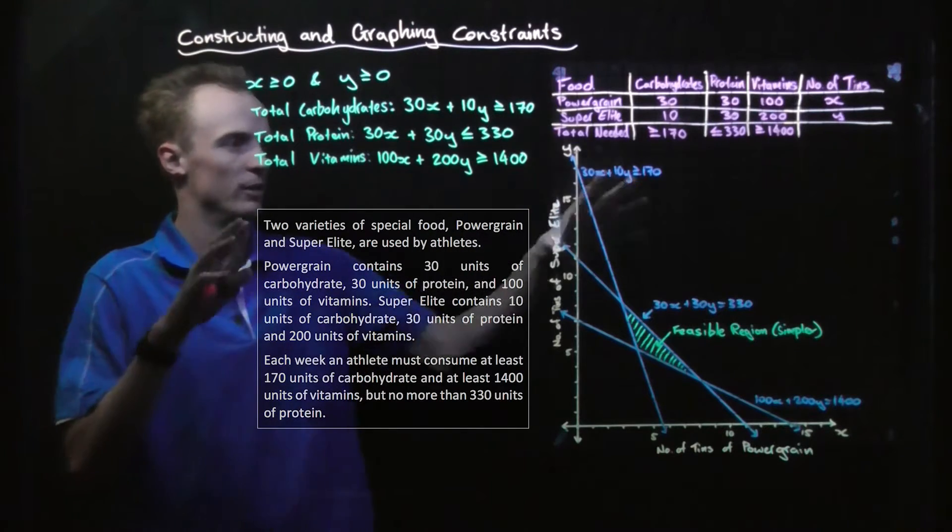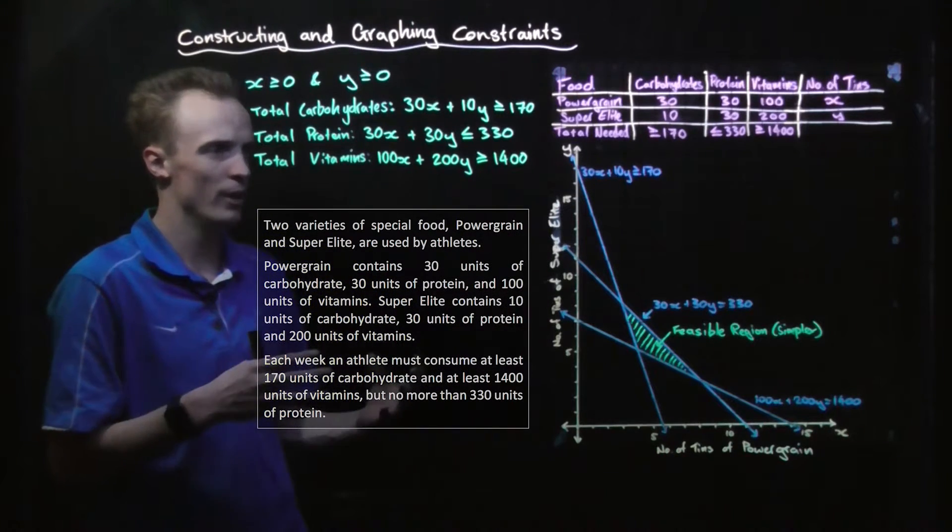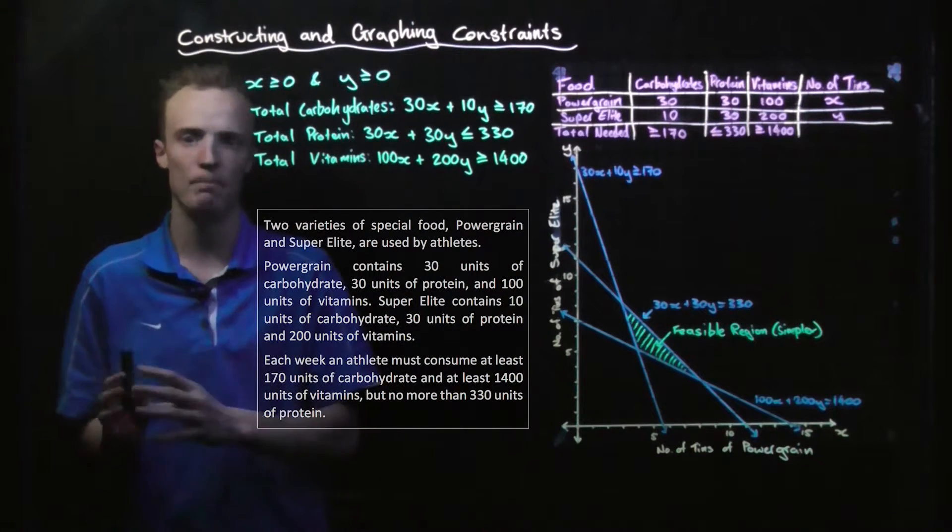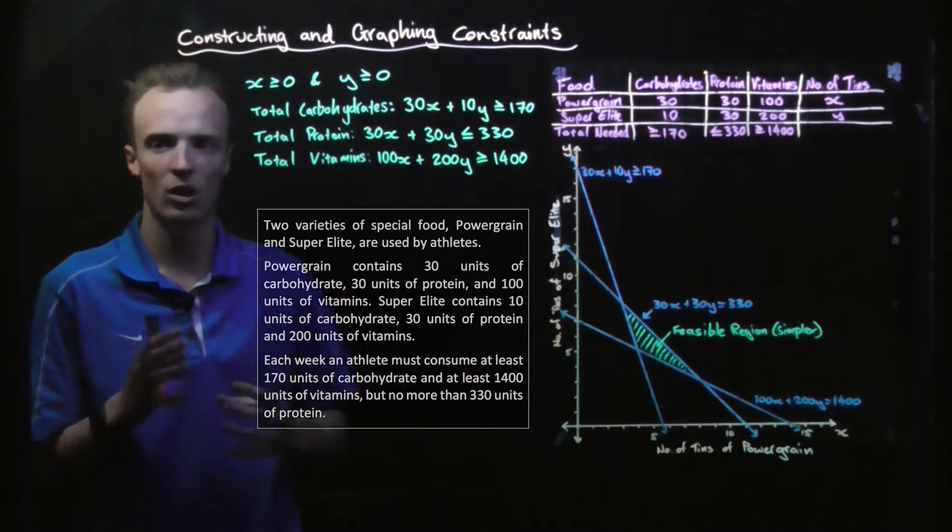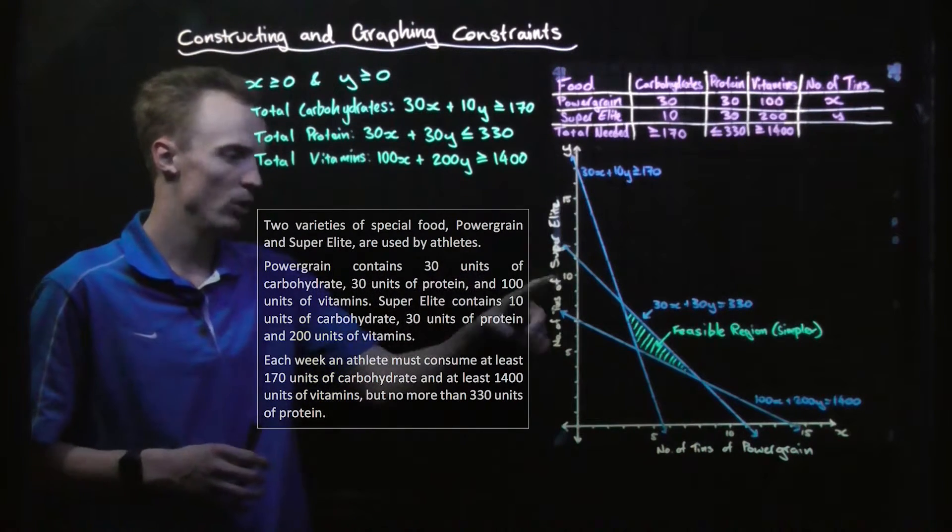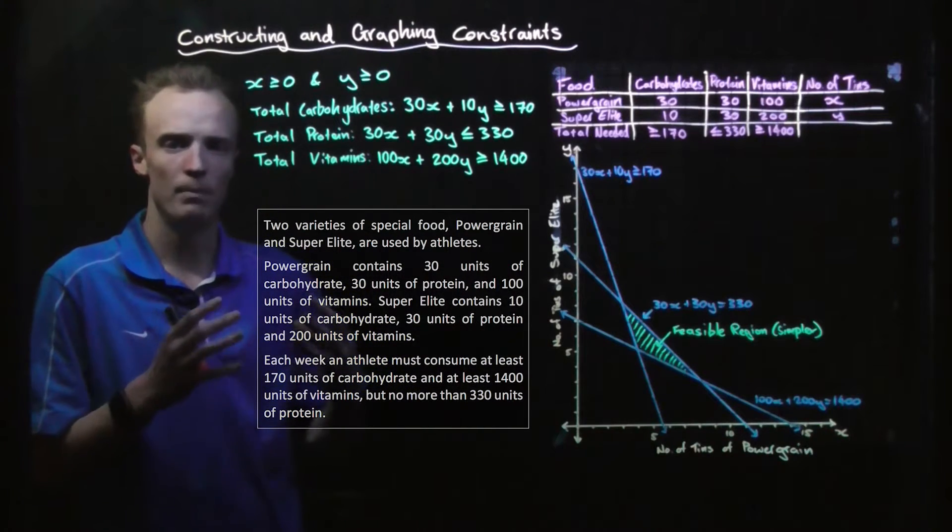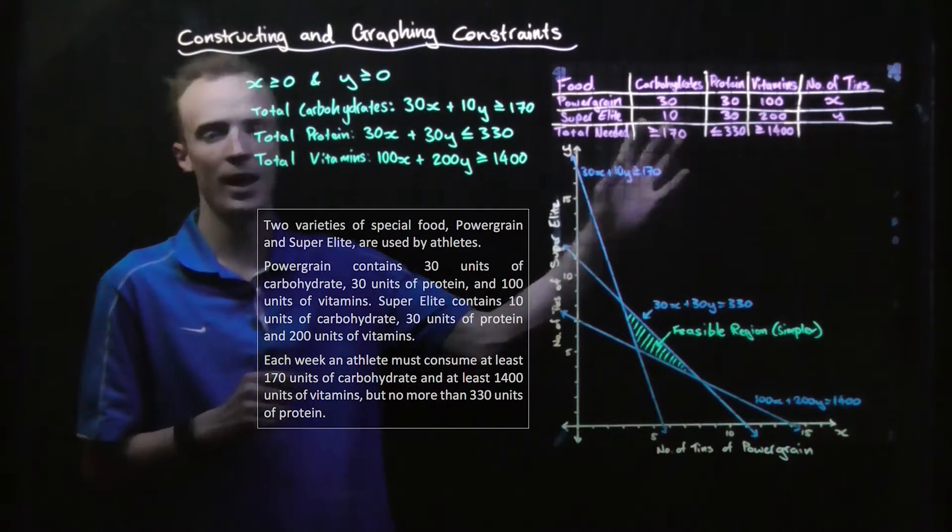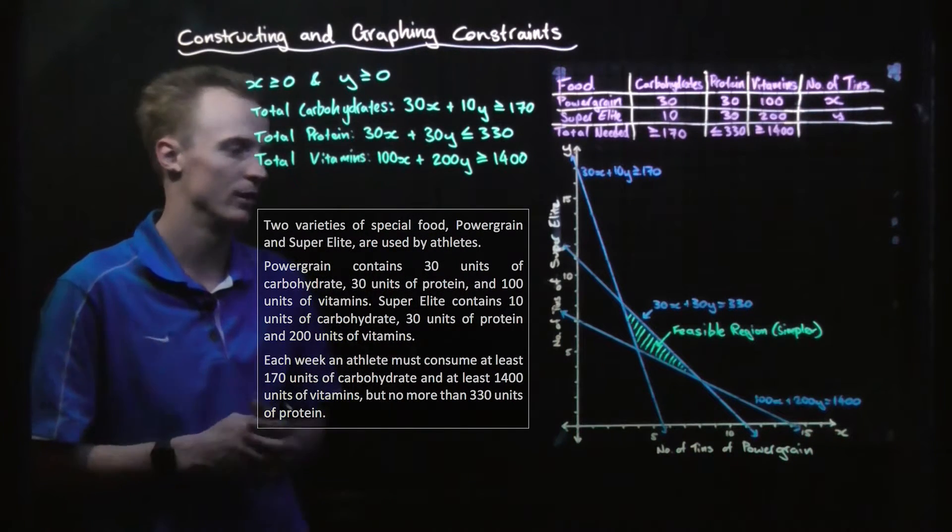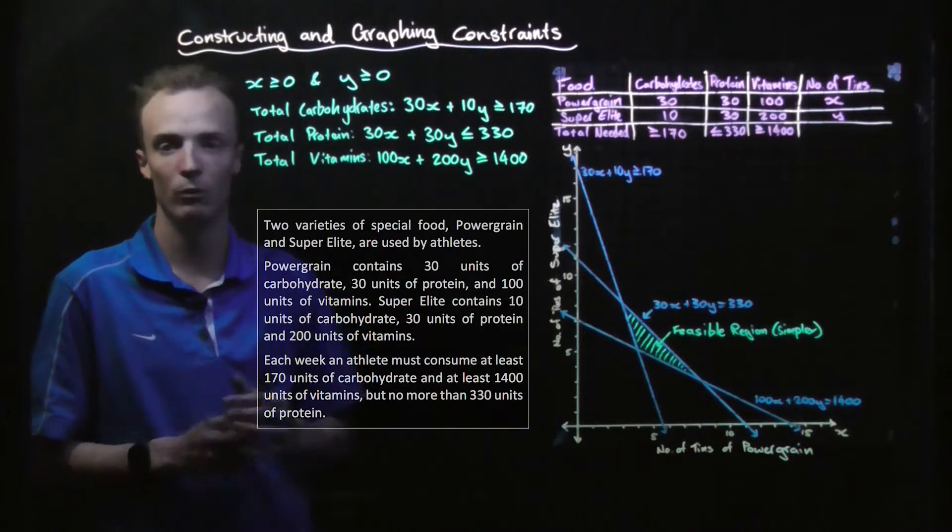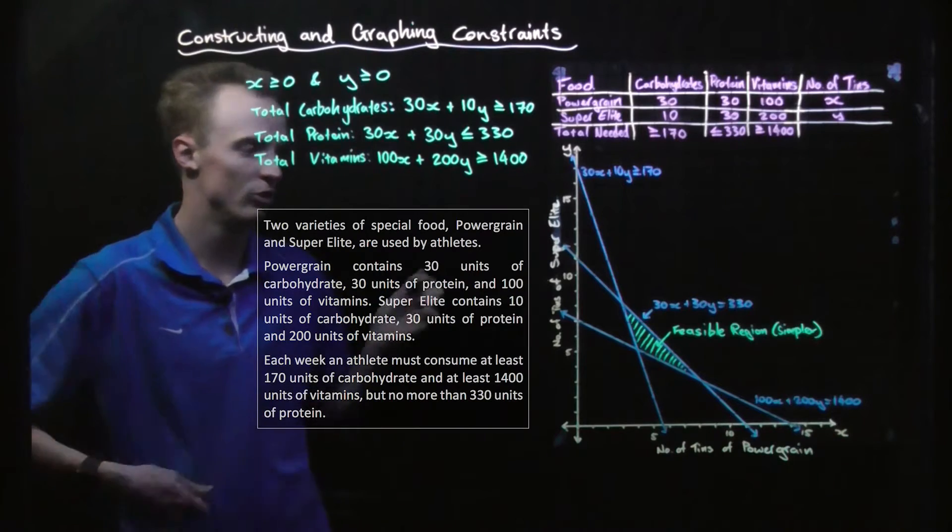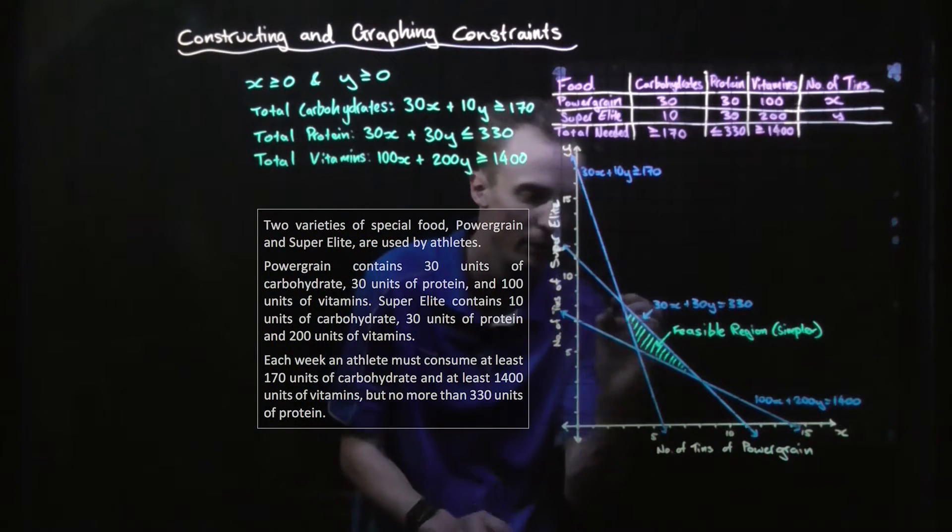Now if we take a look back at our original problem, the reason why we did this was to try and work out what combinations of power grain and super elite food could an athlete buy that met the diet requirements they had. Now we're going to need to buy whole numbers of cans or tins of these products, so our solutions have to be discrete solutions within the feasible region. So we can now find where these discrete solutions exist.